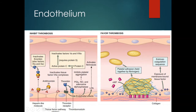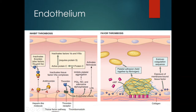Normal endothelium has factors that inhibit thrombosis. The first inhibiting factor is heparin-like molecules present on the endothelial wall, which form a complex with antithrombin 3. Antithrombin 3 is an anticoagulant. Together they remove thrombin from the circulation, as well as factor 9 and factor 10, thereby inhibiting the coagulation pathway and preventing coagulation.